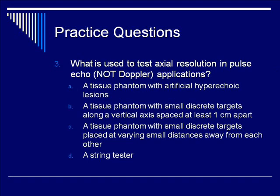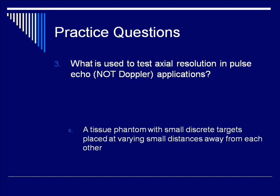Question number 3: What is used to test axial resolution in pulse echo — not Doppler — applications? Is it A) a tissue phantom with artificial hyperechoic lesions; B) a tissue phantom with small, discrete targets along a vertical axis, spaced at least one centimeter apart; C) a tissue phantom with small, discrete targets placed at varying small distances away from each other; or D) a string tester? The answer is C: a tissue phantom with small, discrete targets placed at varying small distances away from one another.